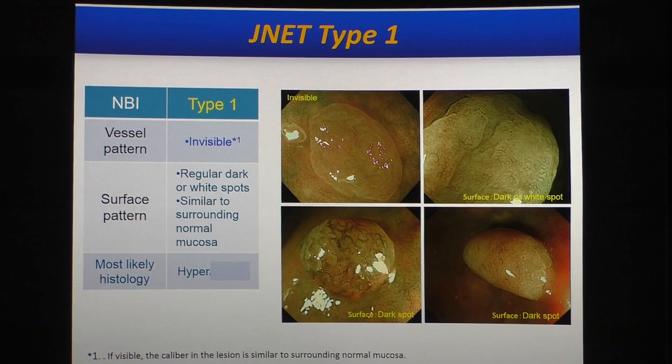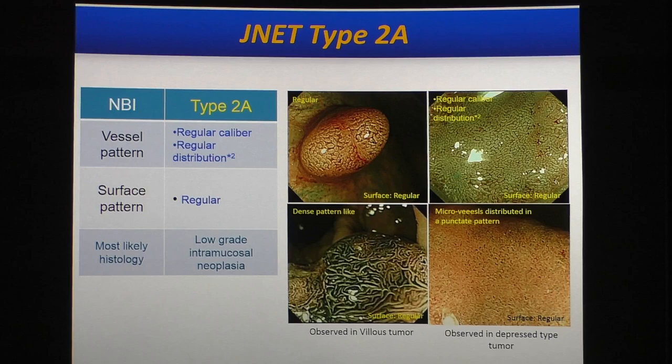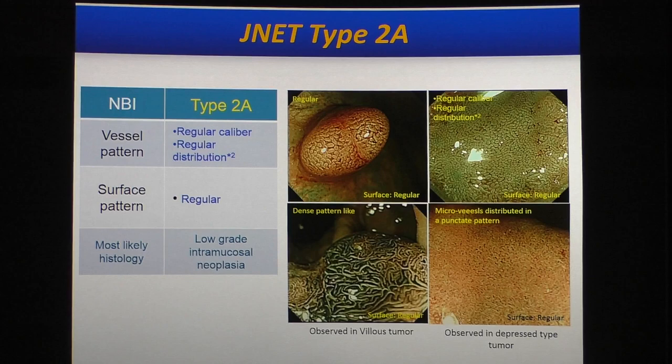What about type 2A? Type 2A is most often observed in daily practice. In the vessel pattern, regularly lining vessels surrounding the normal pit structure are observed. In that case, this lesion is classified as JNET type 2A, which usually indicates tubular adenoma or low-grade intramucosal neoplasia.